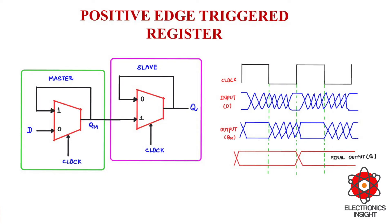We can observe the same thing in the timing diagram. When clock is high, the output QM is going to be held stable for the entire duration of the clock signal. At the same time, the slave stage is going to copy the output of QM to Q. When clock is 1, input 1 of the multiplexer is selected and QM is copied to Q.